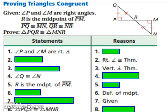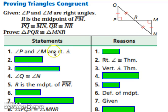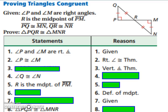Let's try looking at a proof. To prove that two triangles are congruent, all three sides and all three angles have to be congruent. We need enough steps to show that all three corresponding angles and all three corresponding sides are congruent to each other. We are given that angle M and angle P are right angles, and based on the right angle congruence theorem, we can state that angle P and angle M are congruent. That's our first angle.